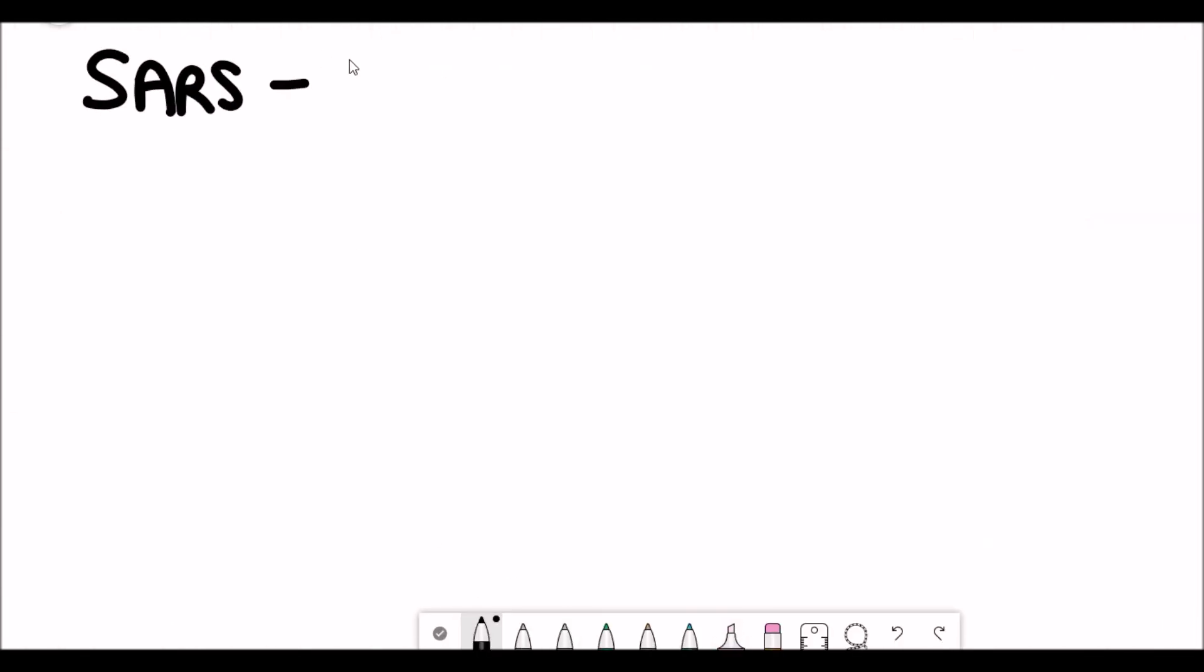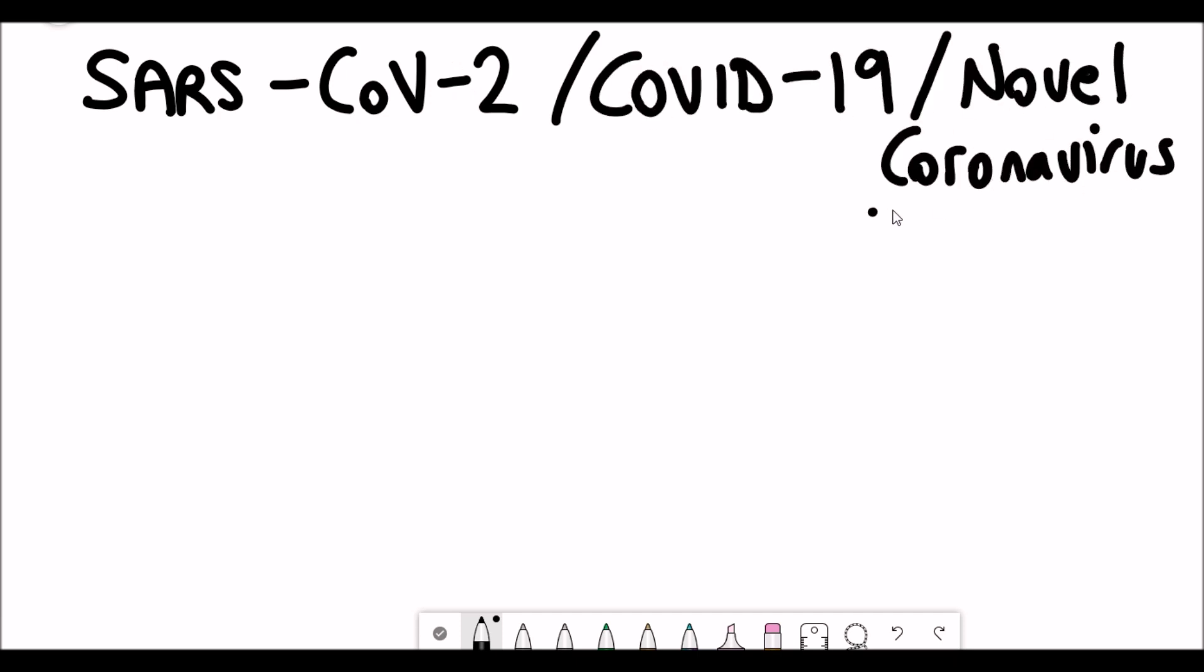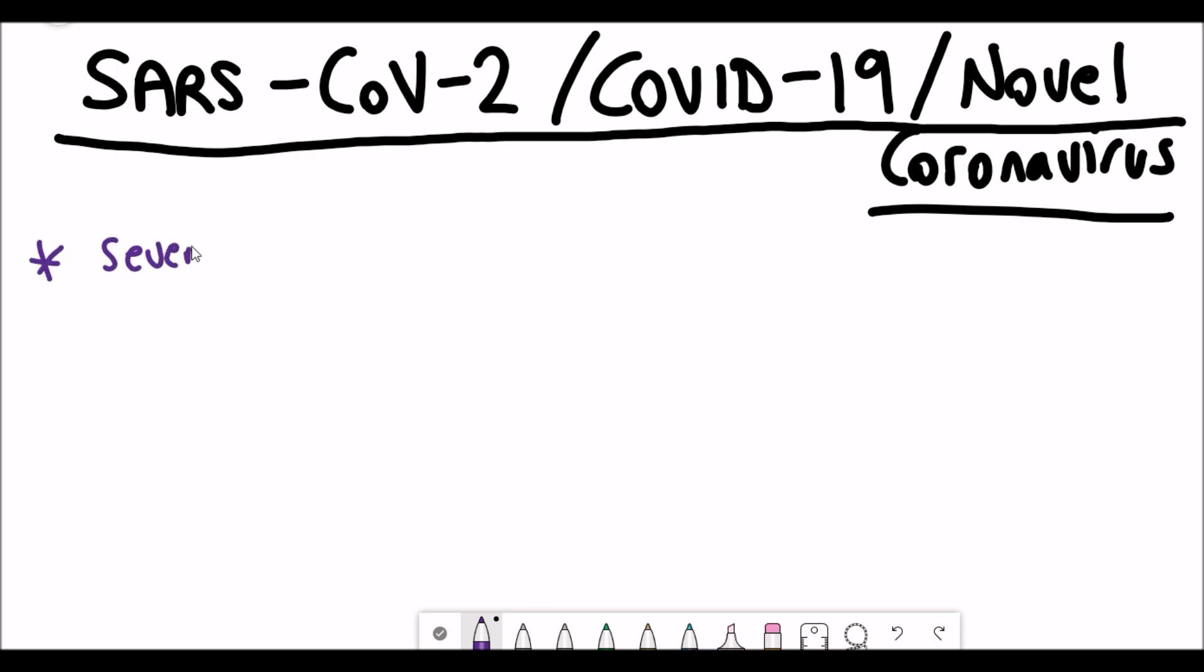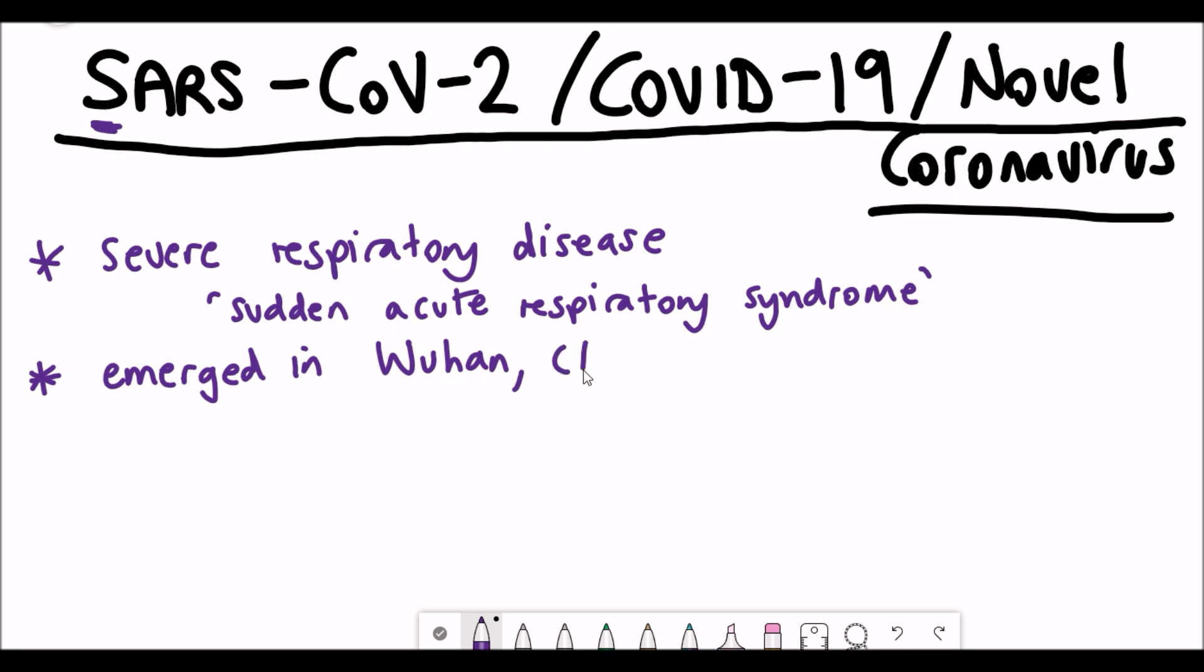So SARS-CoV-2, COVID-19, or the novel coronavirus, is a type of coronavirus, a virus that can cause a severe respiratory disease. And so SARS actually stands for Sudden Acute Respiratory Syndrome. It was previously referred to as SARI. And it emerged in Wuhan, China, back in December last year.